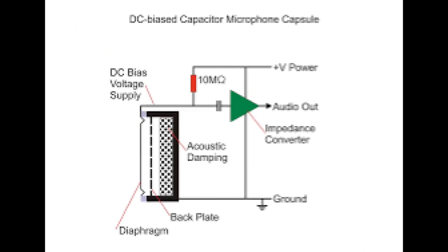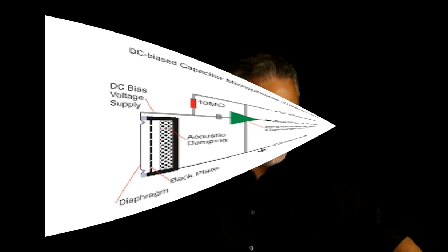The only other kind of condenser mic we'll talk about today is an electret mic. That uses a permanently charged back plate and does not require external power — it's more like a dynamic mic, sort of a hybrid between the two. Here's one — I use this for my video camera when I go out to record.